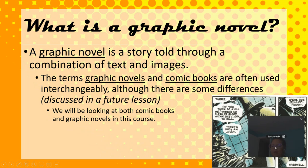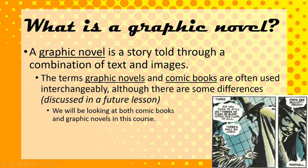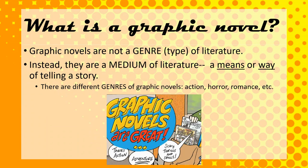So we're going to talk about graphic novels today. A graphic novel is a story told through a combination of text and images. The terms graphic novel and comic books are often used interchangeably, but there are some differences. We'll be looking at comic books and graphic novels, and I'm going to give you an example of a graphic novel to go through today. Graphic novels are not a genre — a type of literature — instead they're a medium of literature, a means or a way of telling a story. There are different genres of graphic novels: action, horror, romance, etc. But we're going to focus on our example of a children's book today.